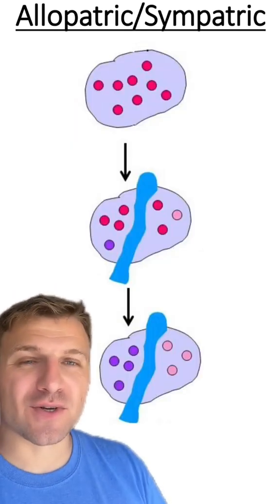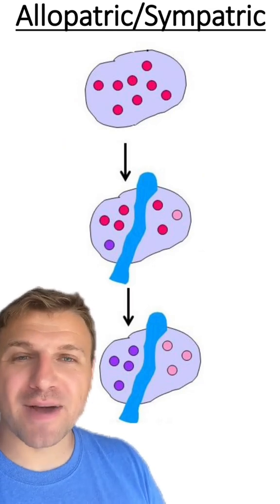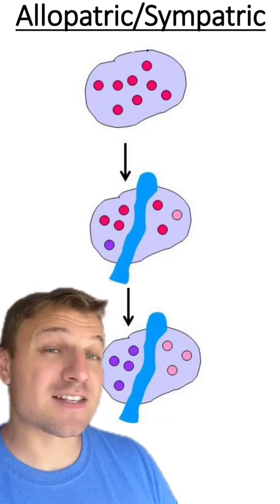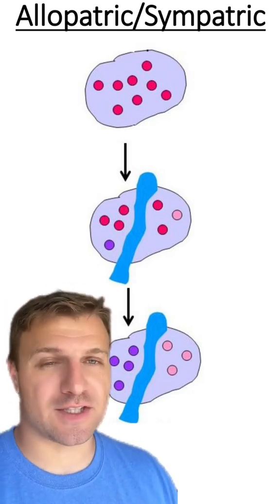And our last one. You can see the original species was divided by a river and after many generations there are two distinct species. So this is an example of allopatric speciation.